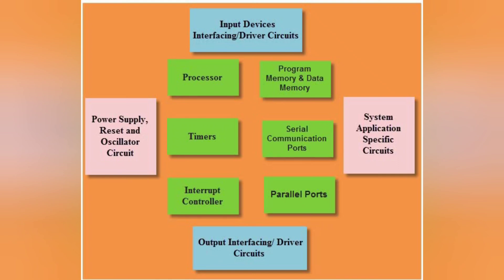If you want to interface any device with the microcontroller or embedded system, you have to go through a serial communication port or parallel port. The system application specific circuit may change as per the application — that means a specific application-specific circuit will be required.